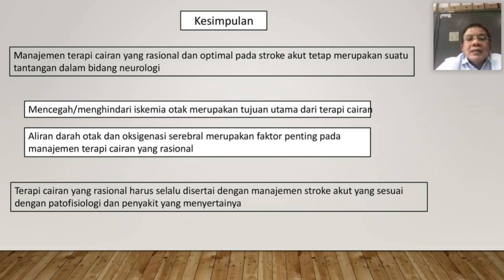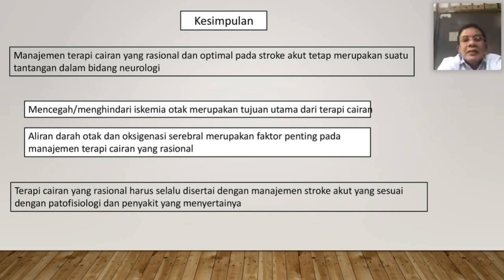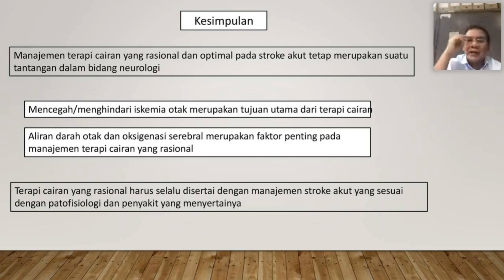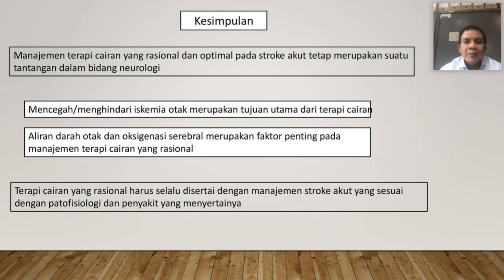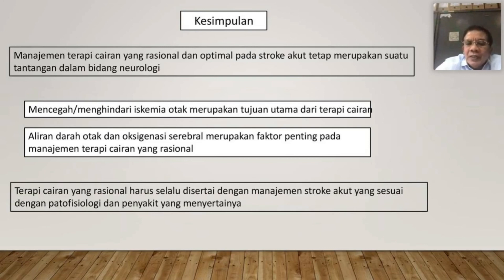Dari terapi cairan yang baik dan rasional ini bisa mencegah iskemi otak — itulah tujuan utama dari terapi cairan. Aliran darah otak dan oksigenasi serebral merupakan faktor penting pada manajemen cairan rasional — aliran darah otak yang 700 cc per menit per 1400 gram otak. Terapi cairan yang optimal harus selalu disertai dengan manajemen stroke akut secara komprehensif. Pada stroke ischemic trombosis, stroke ischemic emboli, stroke hemoragik intraserebral, stroke hemoragik perdarahan subaraknoid — tentu ada perbedaan dalam manajemen cairannya. Kita harus membuat planning hari per hari.